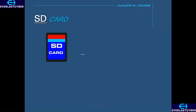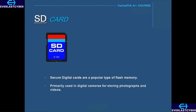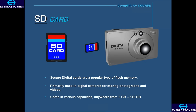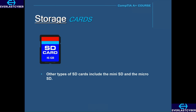Secure Digital, or SD cards, are a well-known type of flash memory. These are primarily used in digital cameras for storing photographs and videos. These photographs and videos can then be easily transferred to a computer with an SD card reader interface. SD cards come in various capacities, anywhere from 2 gigabytes up to 512 gigabytes. Other types of SD cards include the mini SD and the micro SD, and you can see the comparison of the different sizes here.